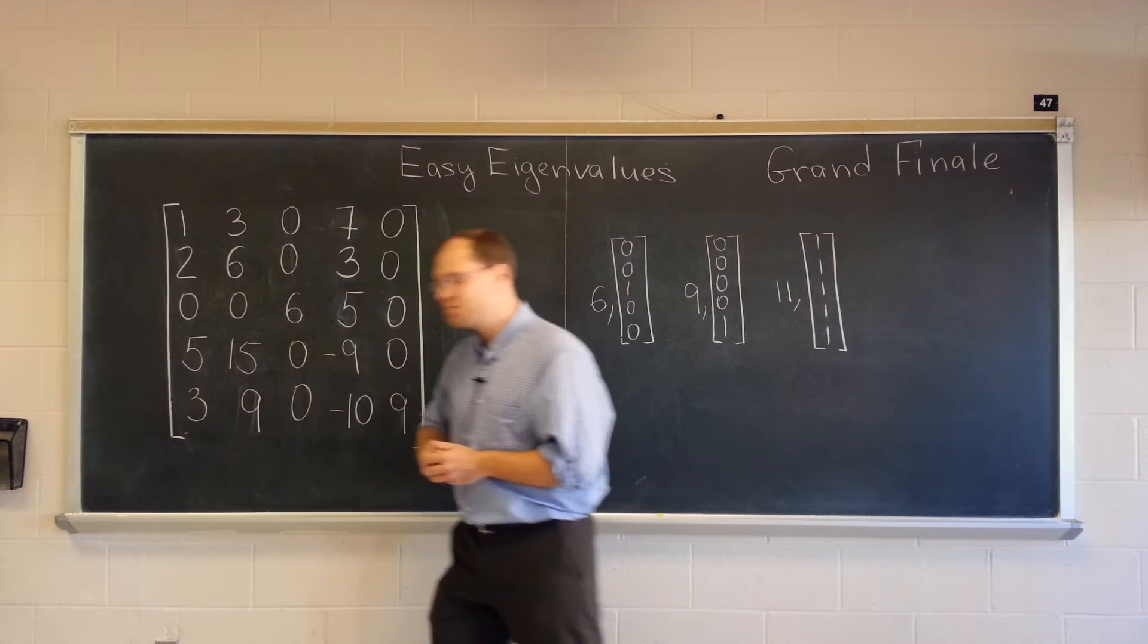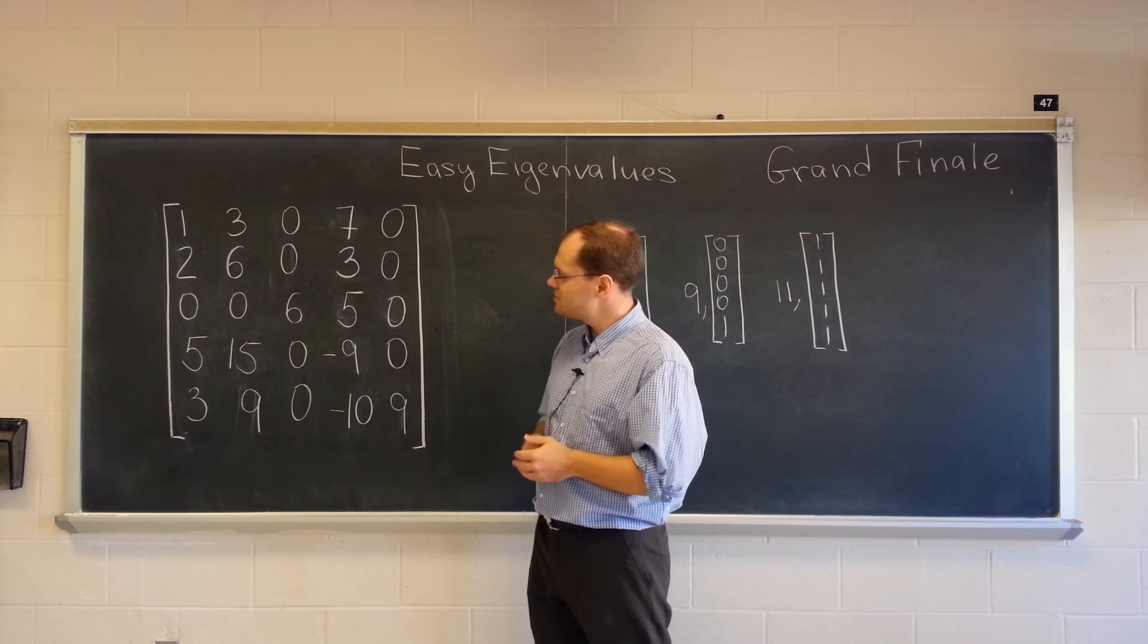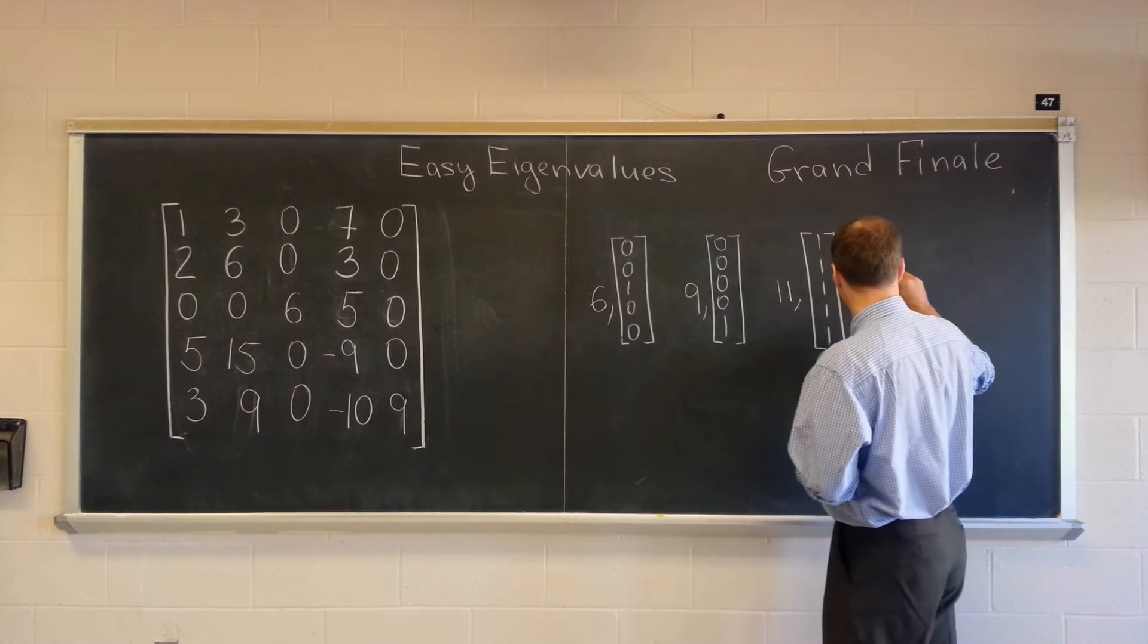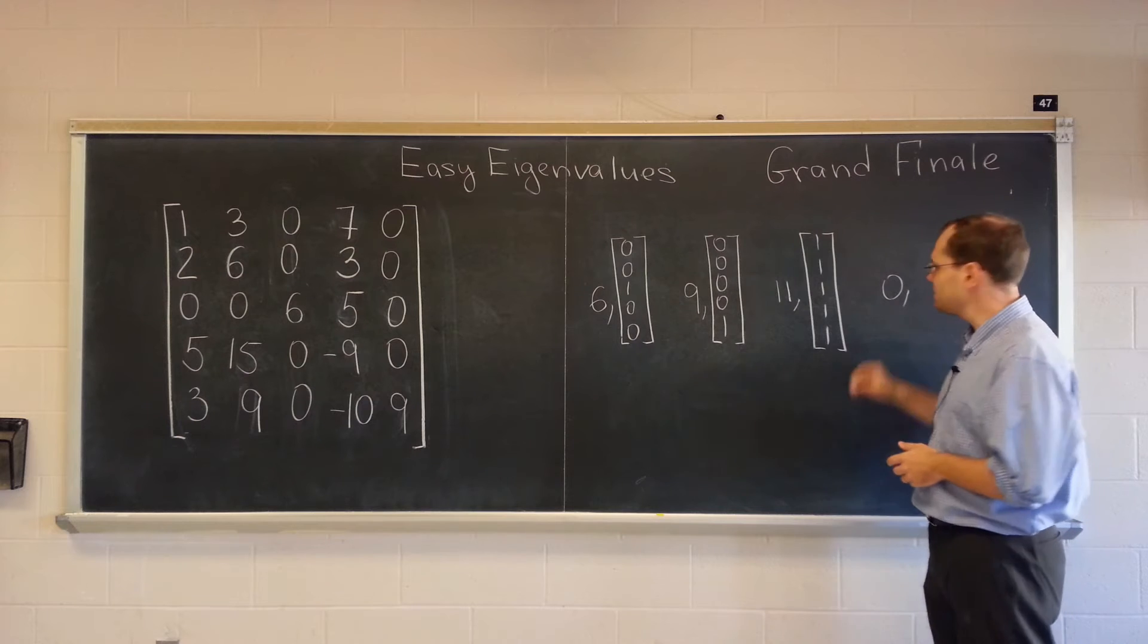The second column is 3 times the first column. Which means that this matrix is singular. Its columns are linearly dependent, which means that 0 is an eigenvalue.